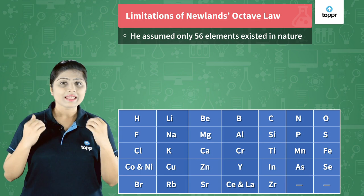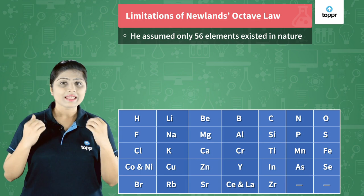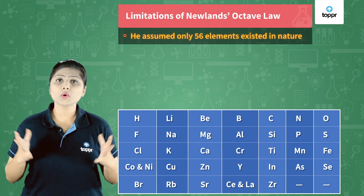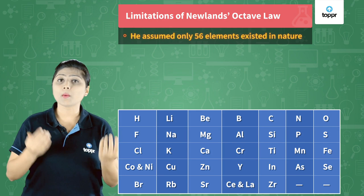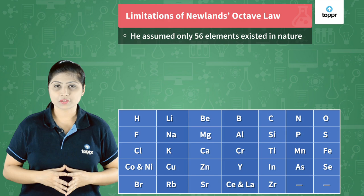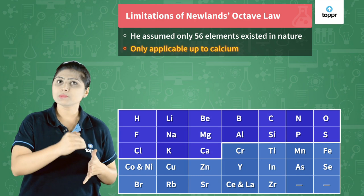But there were certain limitations of this law. At the time, only 56 elements had been discovered, and Newlands thought no more elements would be discovered. So he did not leave any space for new elements to be accommodated in the table. The next limitation is that this rule was only applicable till calcium; elements beyond that did not follow Newlands' Law of Octaves.